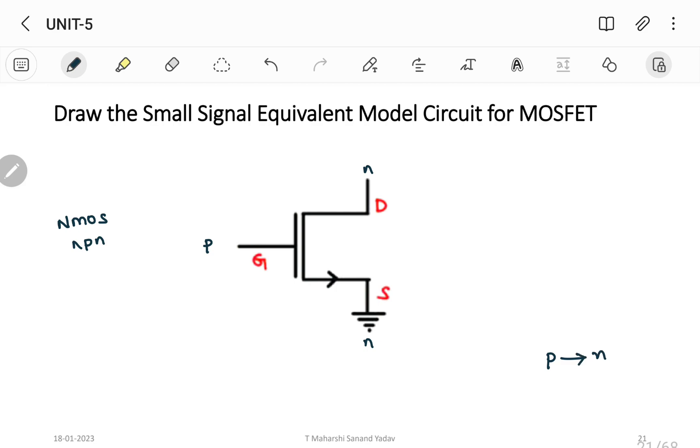We already know that the direction of flow of current will always be from P to N, and the arrow should be indicated only on source. So we already know the working of bipolar junction transistor which contains three terminals: emitter, base, and collector. Similarly, now we are dealing with FET which contains source, gate, and drain. In BJT, the arrow will be indicated on emitter terminal, whereas in FET it will be on source.